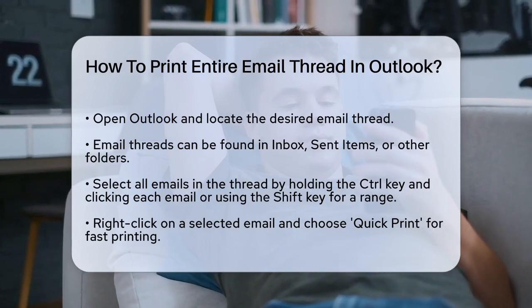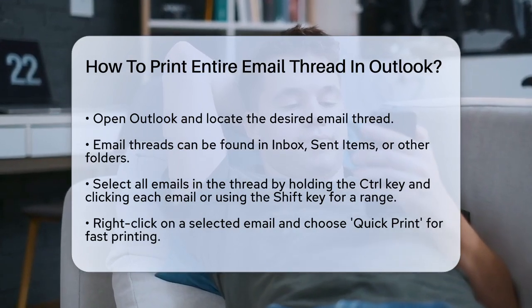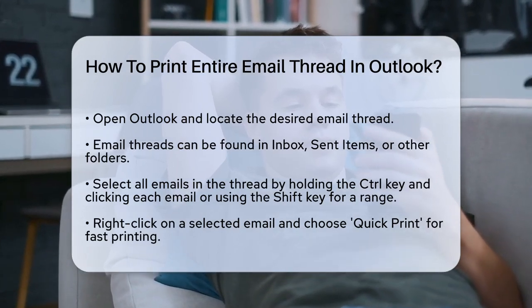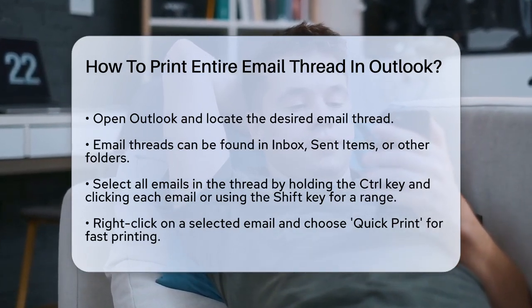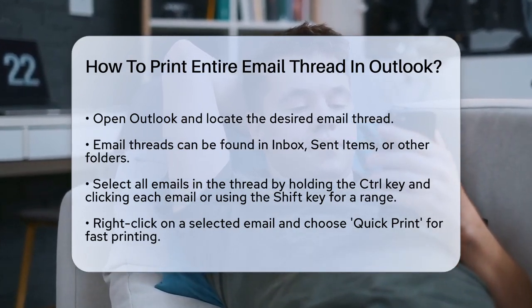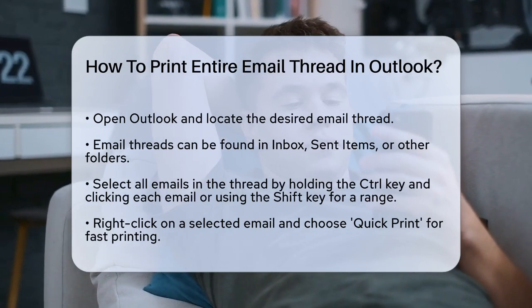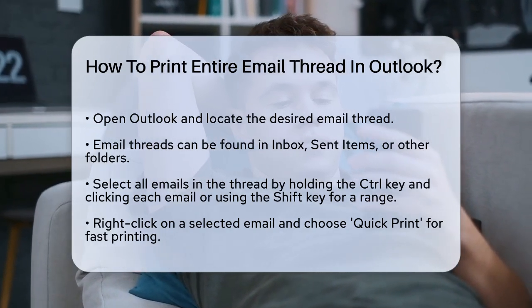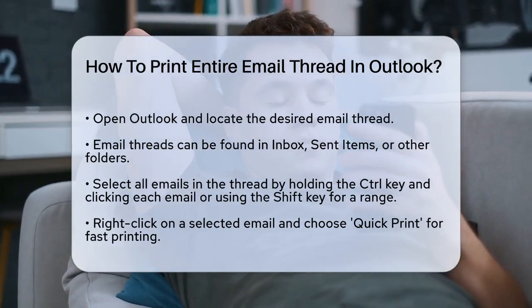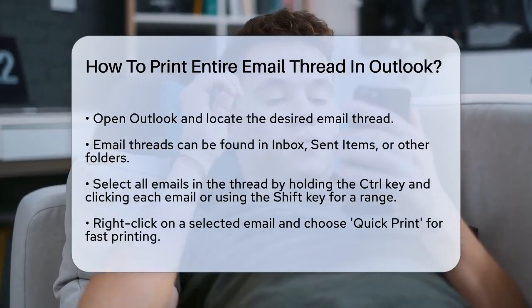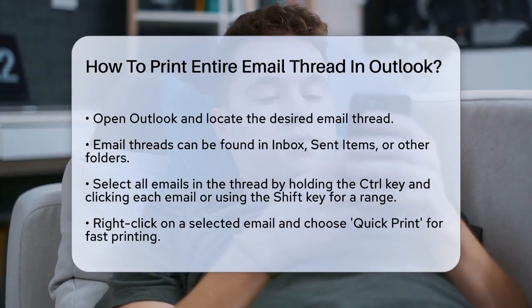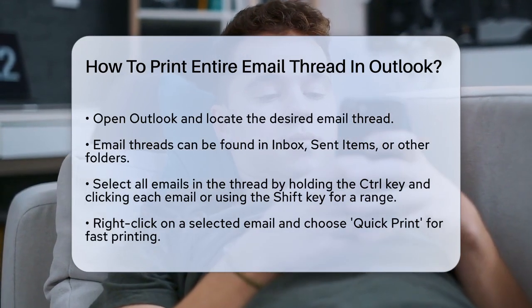To print the entire thread, you'll need to select all the emails in the thread. You can do this by holding down the Control key and clicking on each email, or by using the Shift key to select a range of emails.